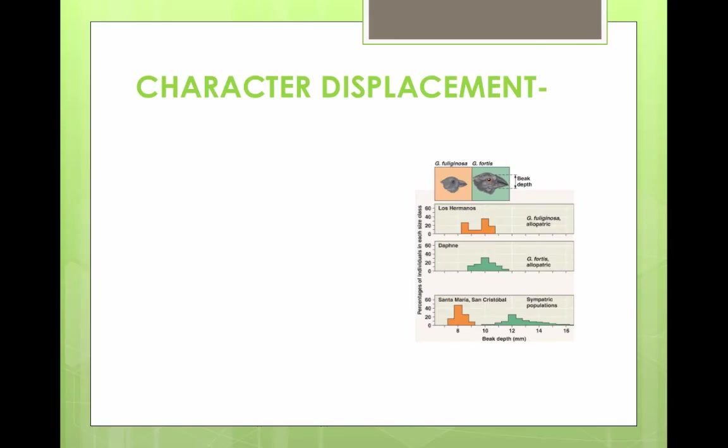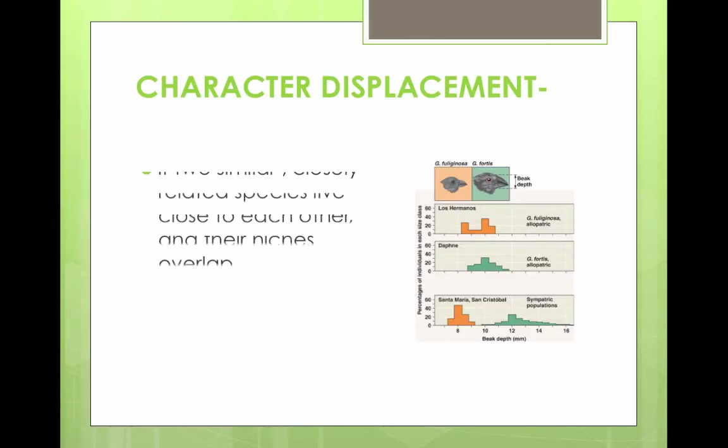Character displacement occurs when two similar, closely related species live close to each other and their niches overlap — this is called sympatric. Character displacement may cause them to develop less similar characteristics.